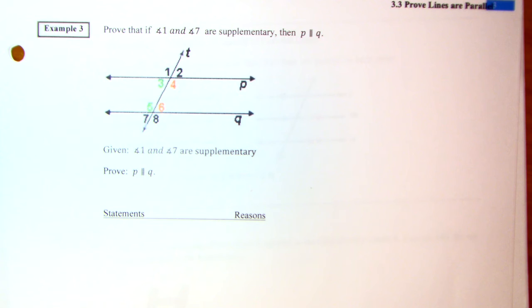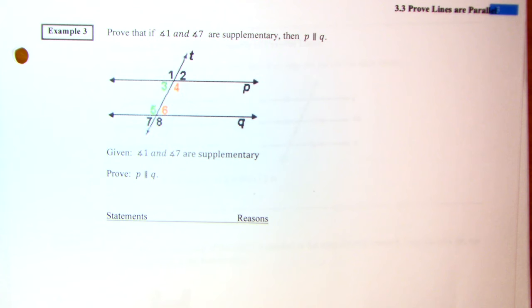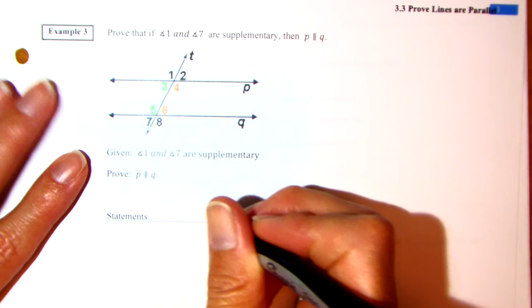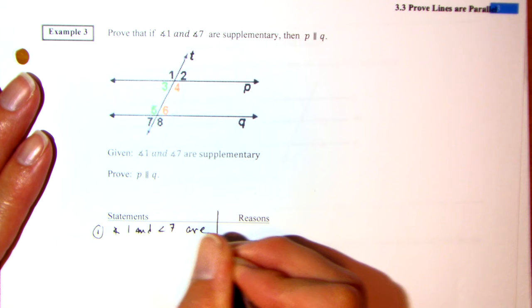Let's prove that if those two angles are supplementary — meaning they add to 180 — then the lines are parallel. Look at where angles 1 and 7 are. We haven't learned anything about same side exterior, so we're going to have to work with it. Starting off with the information you're given: angle 1 and angle 7 are supplementary. Given.